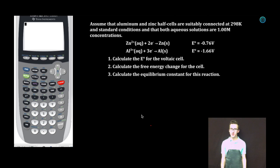Assume that aluminum and zinc half cells are suitably connected at 298K in standard conditions and that both aqueous solutions are 1.00 molar concentrations. Standard conditions. We're given a couple of reduction potentials.